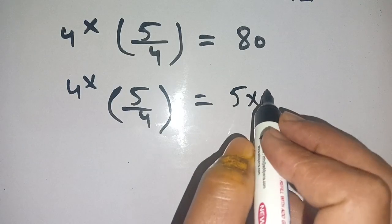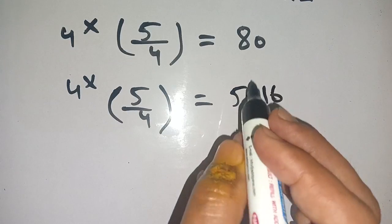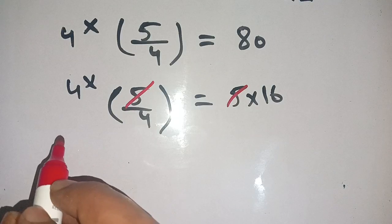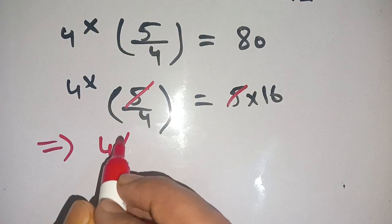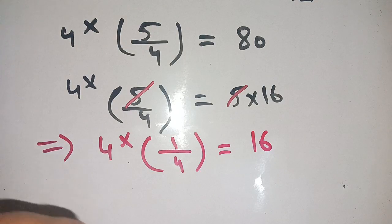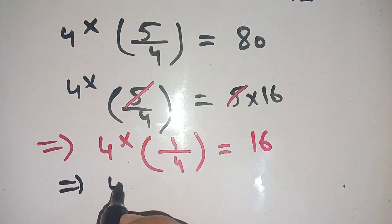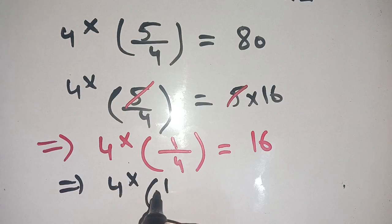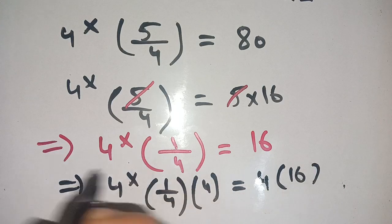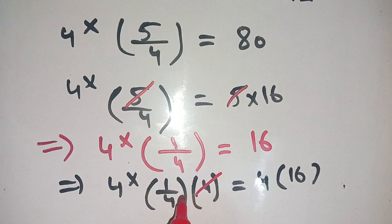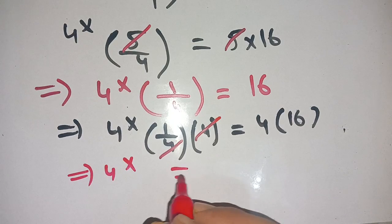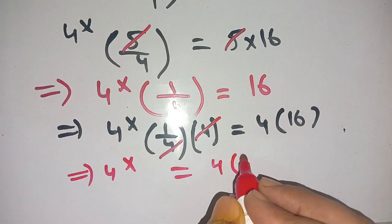We note that 80 = 5 × 16. We cancel the 5 on both sides, giving 4^x × (1/4) = 16. Multiplying both sides by 4: 4^x = 4 × 16 = 64, which can be written as 4^3.